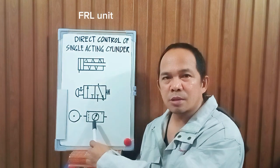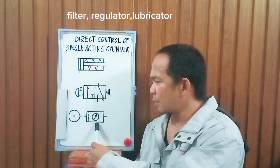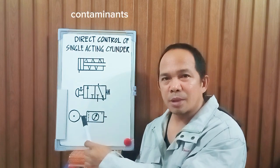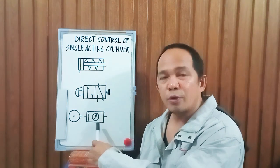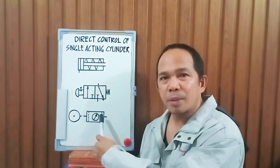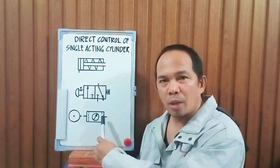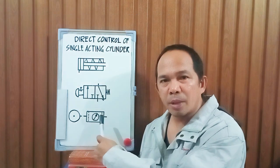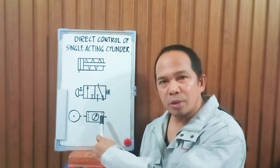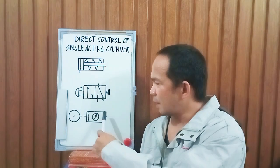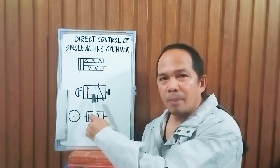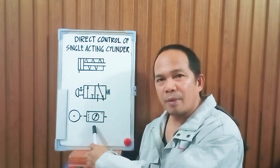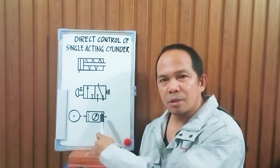Then we have here the FRL unit. What is this FRL unit? This is filter, regulator, and lubricator. Why do we need a filter? Because there are contaminants in the air like dust and other contaminants, so we have to filter the air. The regulator is for the pressure — for us to monitor the pressure. And the lubricator: why? Because these cylinders and valves are made up of metals. If we inject air with no lubricants, they will seize up after some time. So we need to put a lubricant — a very small amount of lubricant enters these metal parts to avoid the seizing up of these devices. So this is your FRL unit — stands for filter, regulator, and lubricator.